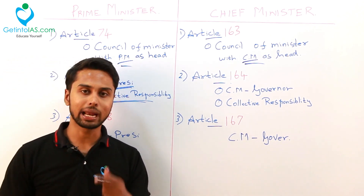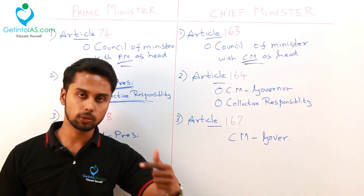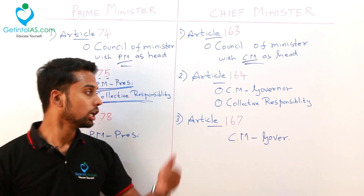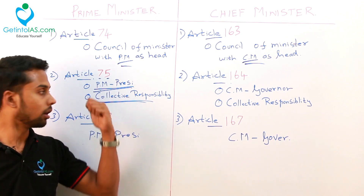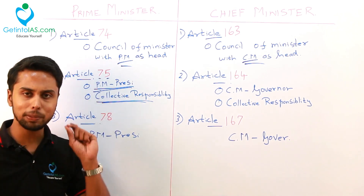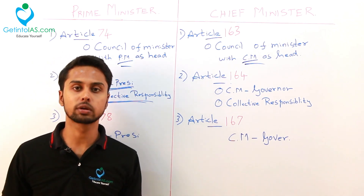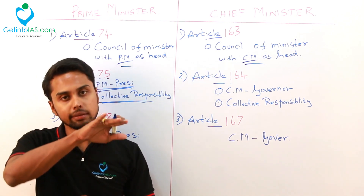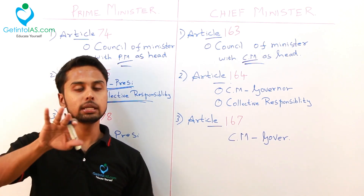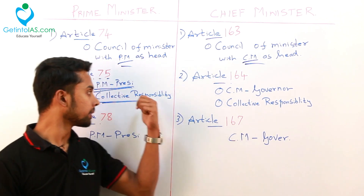Using these devices, your parliament or your state legislature will have a check on collective responsibility. If the council of ministers is losing the majority, the simple crux of collective responsibility is: either all the council of ministers swim together or they sink together. If they are having the majority, they will continue till the end of the five years. If they are losing the majority, then the council of ministers will be dissolved.